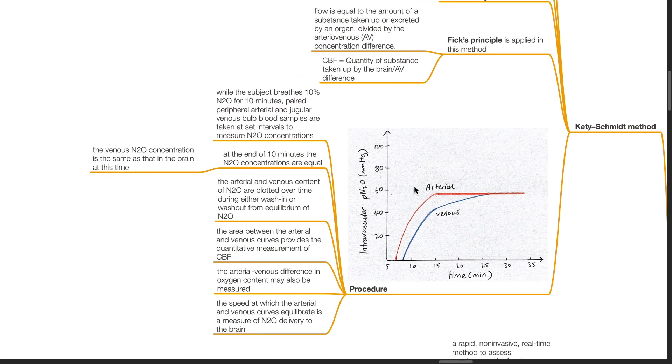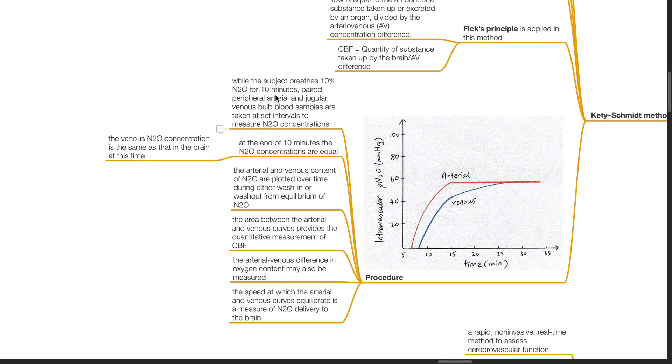Procedure: while the subject breathes 10% nitrous oxide for 10 minutes, paired peripheral arterial and jugular venous bulk blood samples are taken at set intervals to measure nitrous oxide concentrations. At the end of 10 minutes, the nitrous oxide concentrations are equal in both samples.